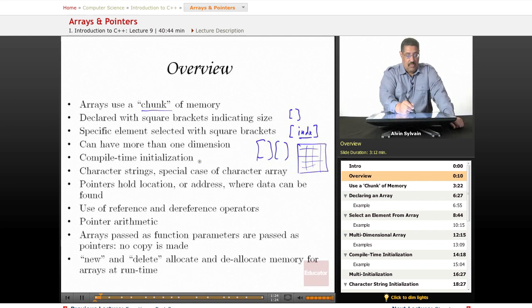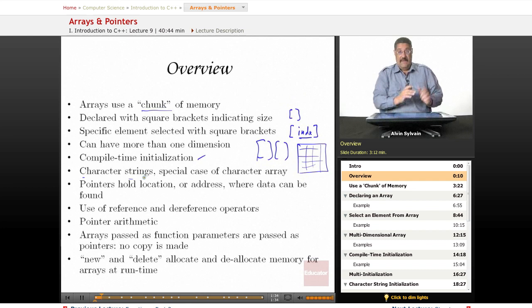You can initialize them at compile time or at run time. You have character strings, which is left over from C, where an array of characters can be considered a string. In C++, the preferred use is to use the string object, but there are occasions when you will want to use the old-fashioned C version, the character string.